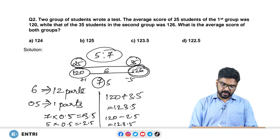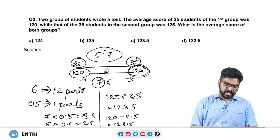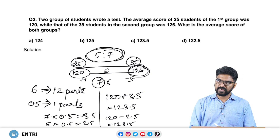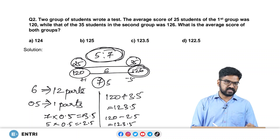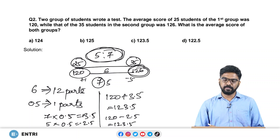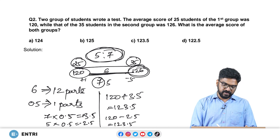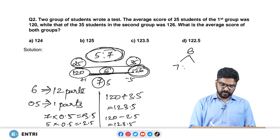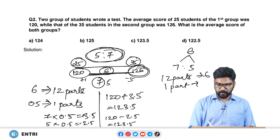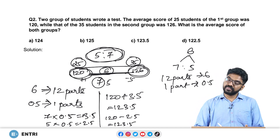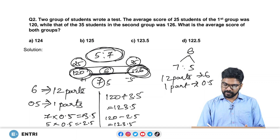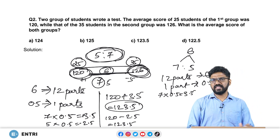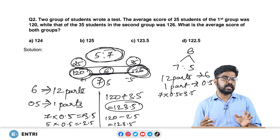To recap: two groups with 25 and 35 students, average scores 120 and 126. First, take the ratio: 5 is to 7. Inverse it: 7 is to 5. Find the difference between averages: 6. Divide 6 into 12 parts — one part equals 0.5. The combined average is 7 parts above 120: 7 into 0.5 equals 3.5, giving 123.5. With this visualization you can solve the question without even writing it down.